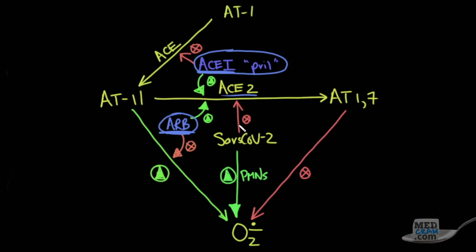Also, SARS-CoV-2 directly will increase superoxide because it recruits PMNs, a certain type of white blood cell. Now, angiotensin-1 is converted to angiotensin-2 through the ACE enzyme, and ACE inhibitors inhibit ACE. In addition to inhibiting ACE, they also tend to increase ACE2, which is the enzyme we just talked about. ARBs will block the effect of angiotensin-2 on the creation of superoxide, but ARBs may also increase the amount of ACE2.